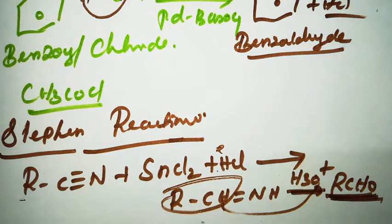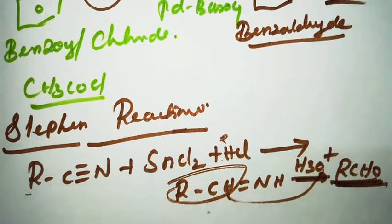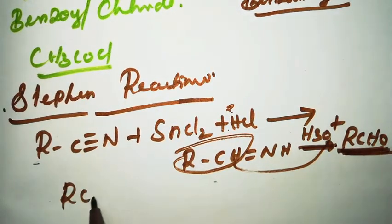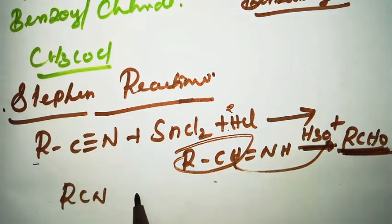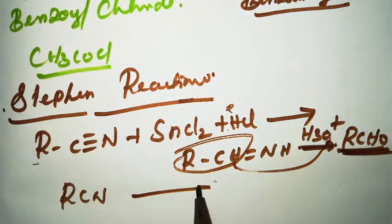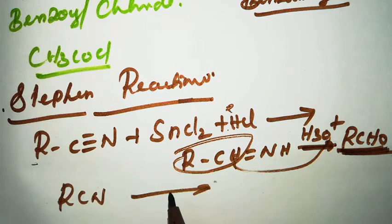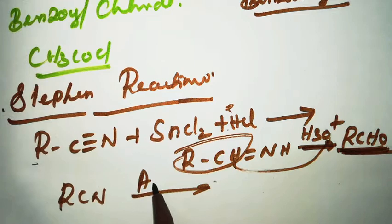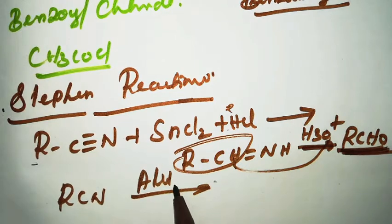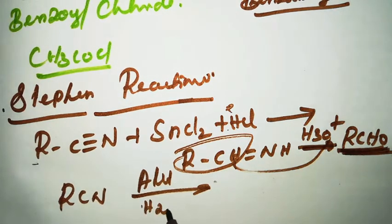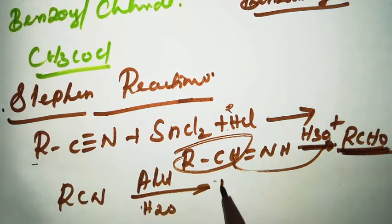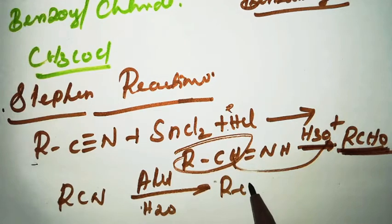Also from nitriles: R-CN in the presence of aluminium hydride (AlH3) and water gives R-CHO directly.